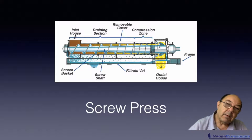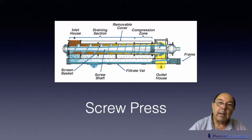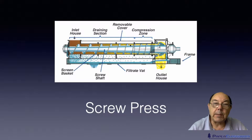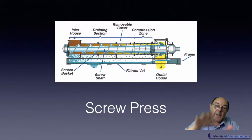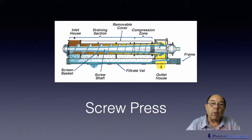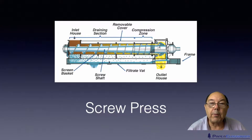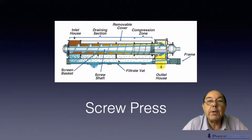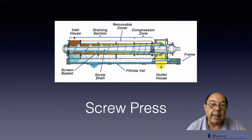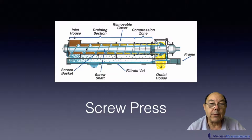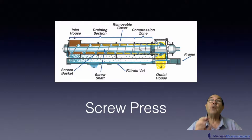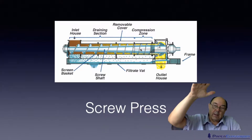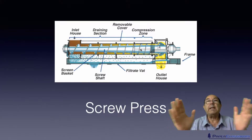We bring the suspension in at one end, the thread moves it forward, and as it goes forward the space between the thread and the housing gets smaller and smaller, so the stock gets compressed more and more and the water falls out through the perforations. Not only that — the pitch of the thread, the distance between one thread and another, also gets smaller as you move along, so we're squeezing the mat in both directions.